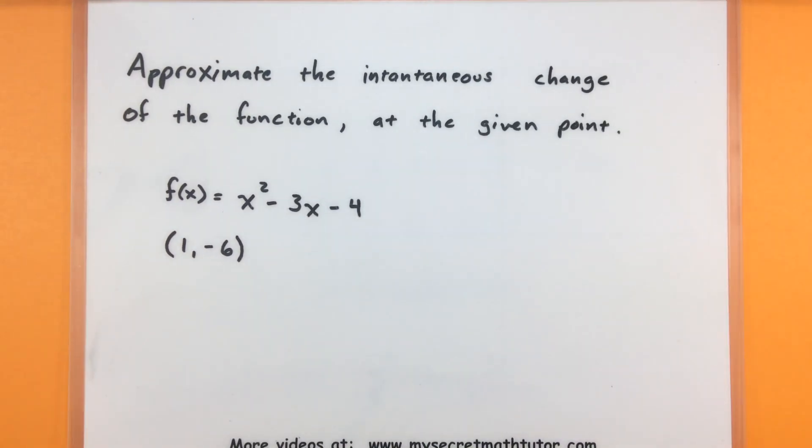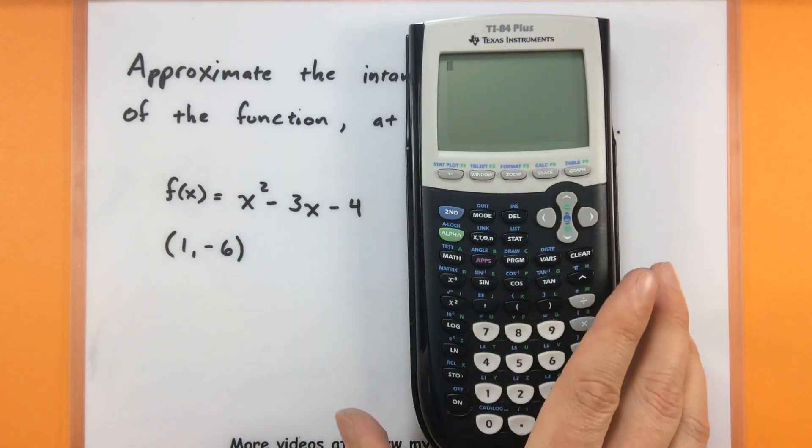To make this a little bit more concrete, let's go ahead and do it with this example problem. So here I have the function x squared minus 3x minus 4, and I'm curious, what is the instantaneous rate of change at the point (1, -6)? So let's go ahead and grab those calculators and get started.